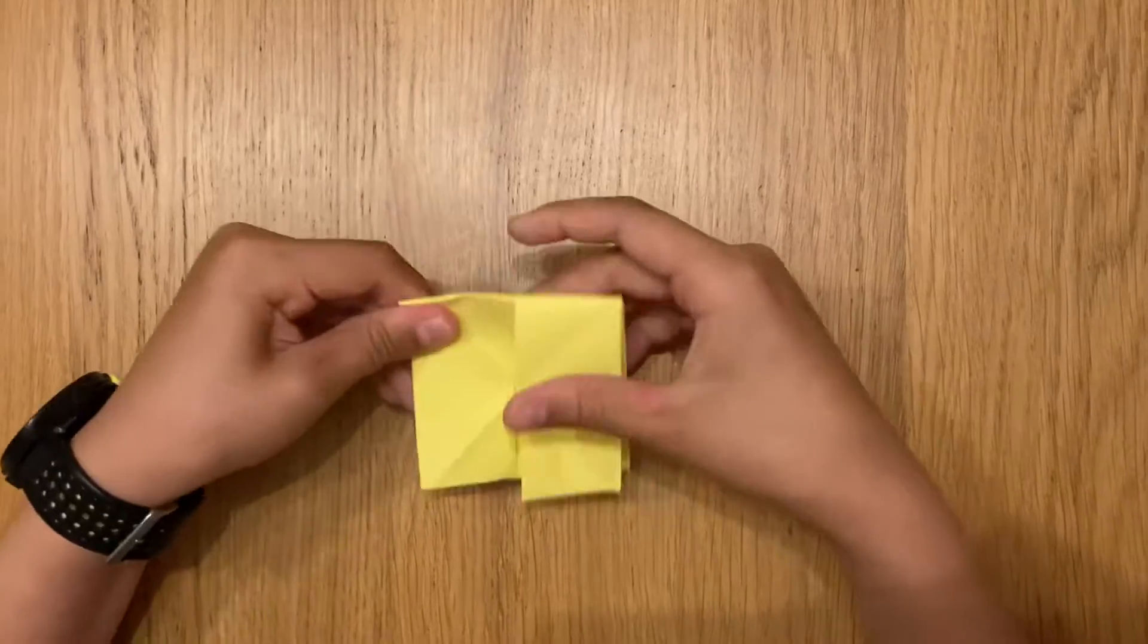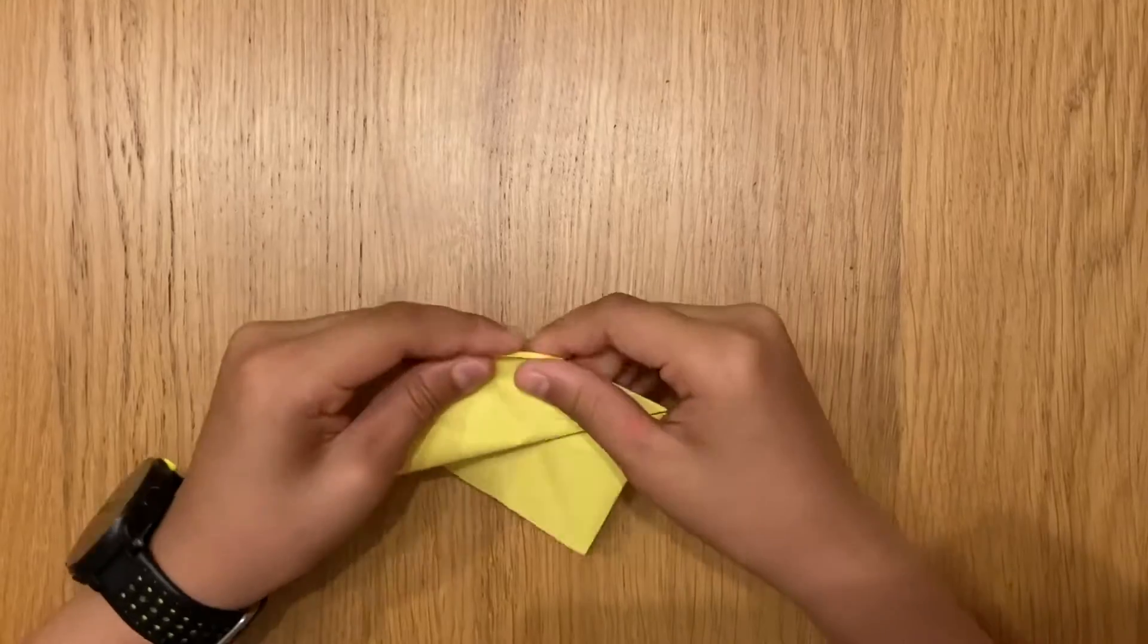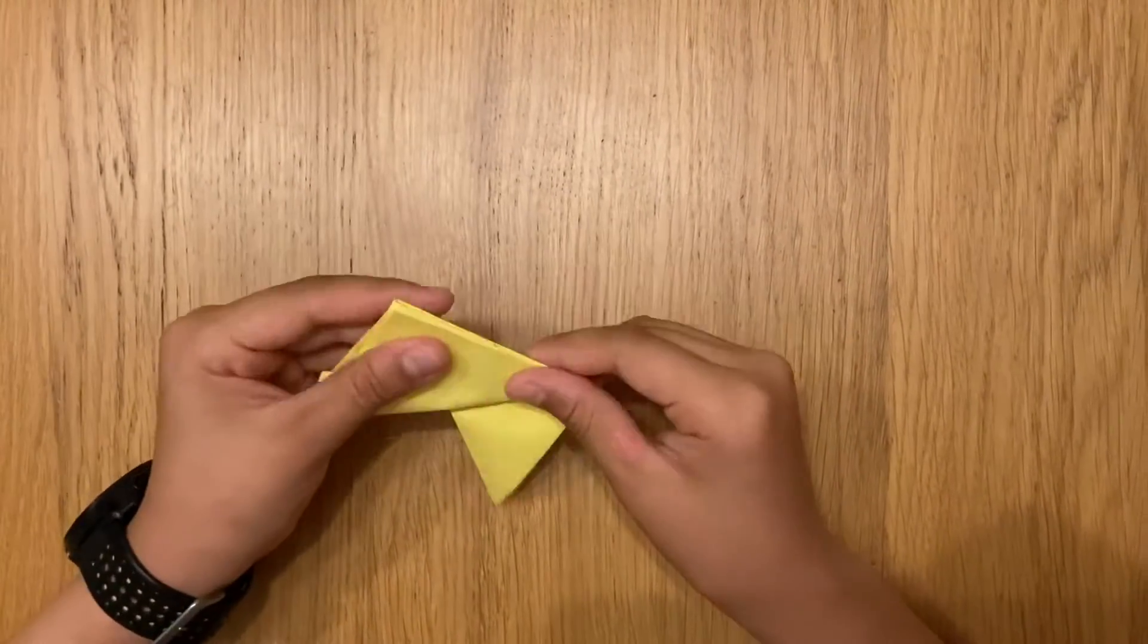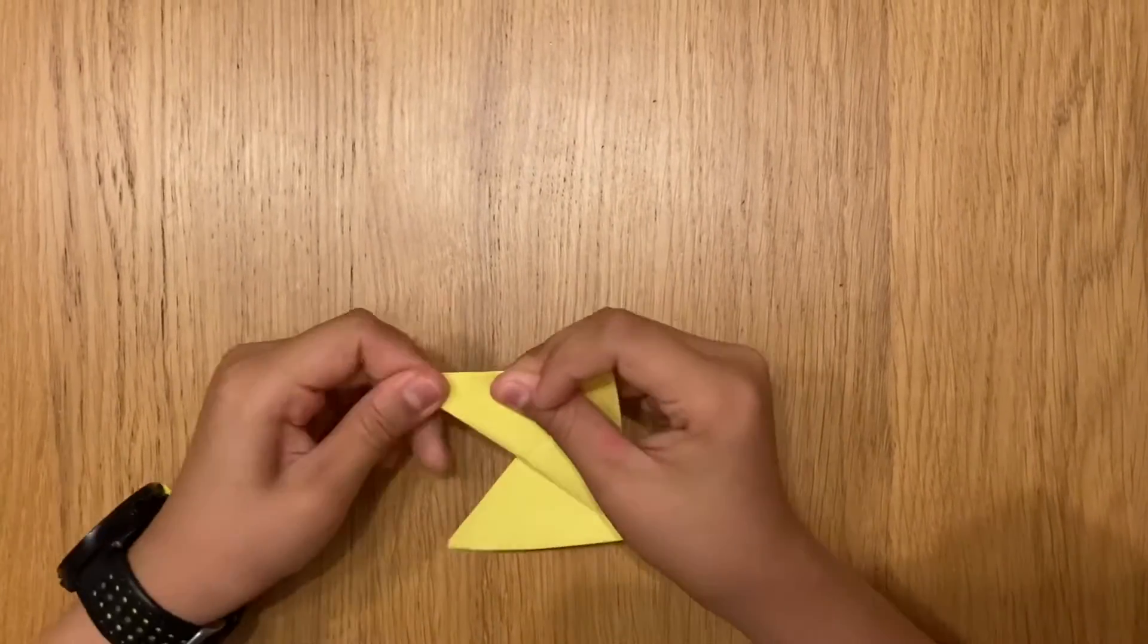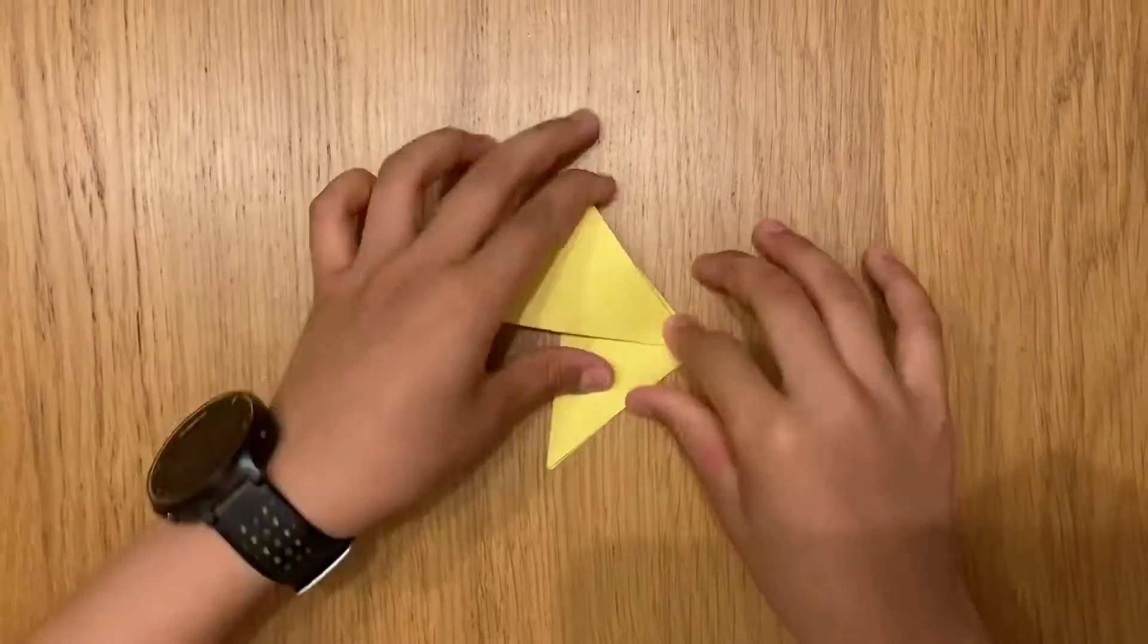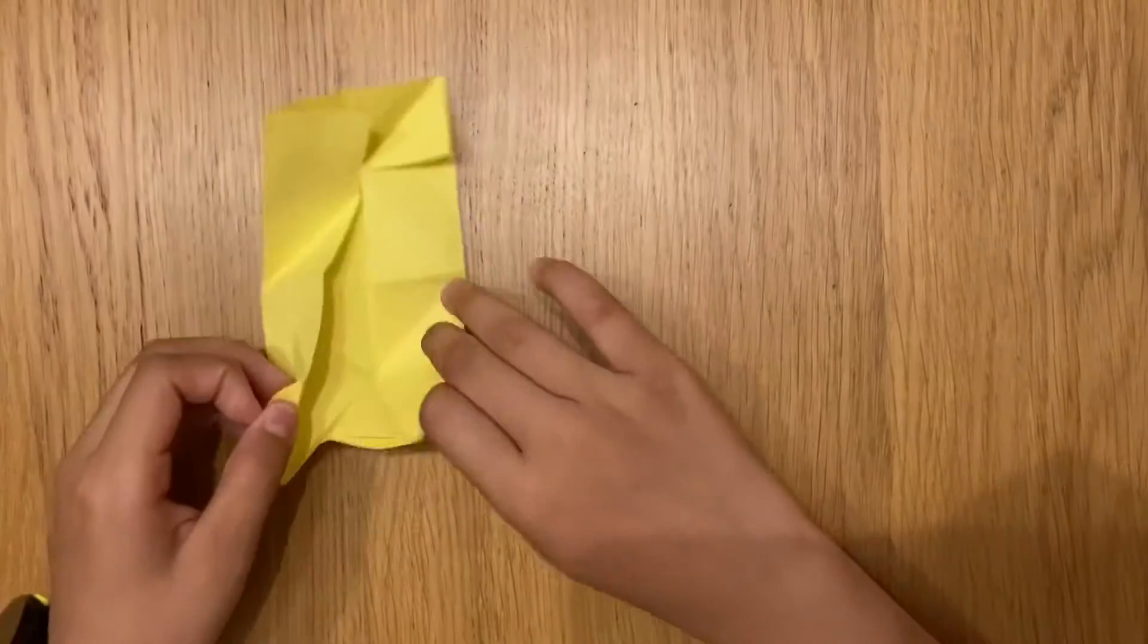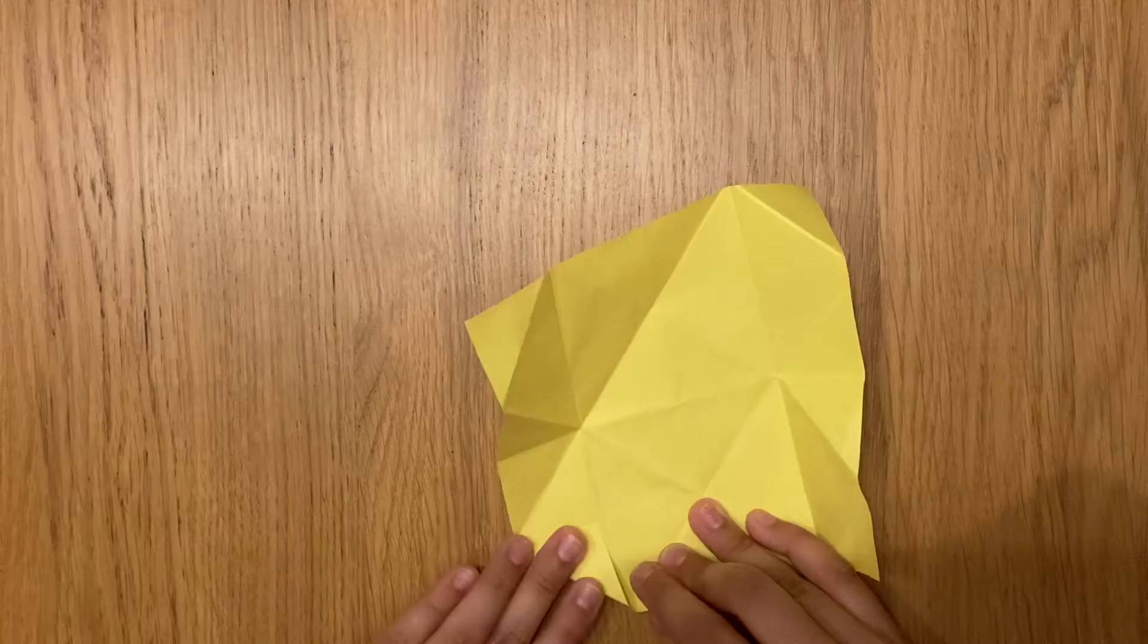See this corner? You put this corner to that corner, and then there we go. Do the same to the other side. Now you just have to make them stable enough. Then open them all up. See these two wobbly triangles? Turn them into the inside.